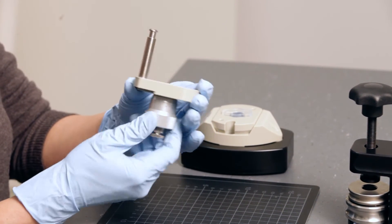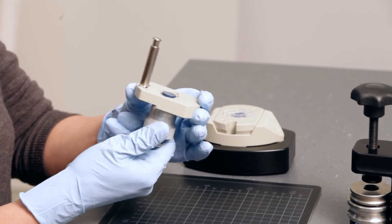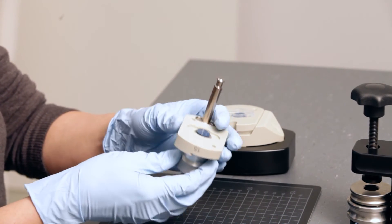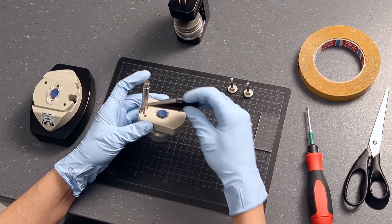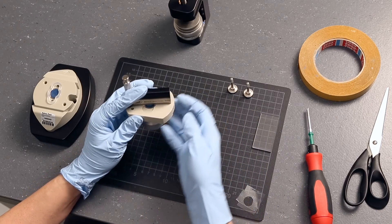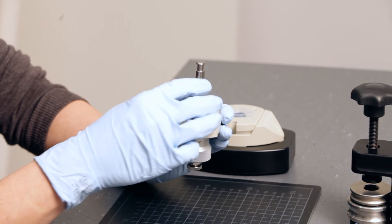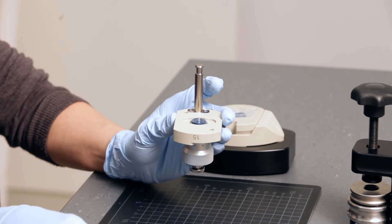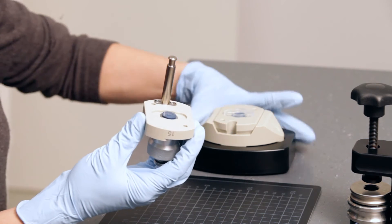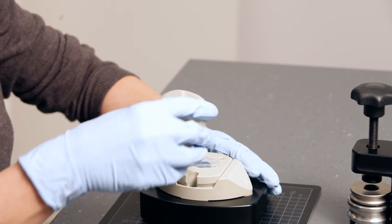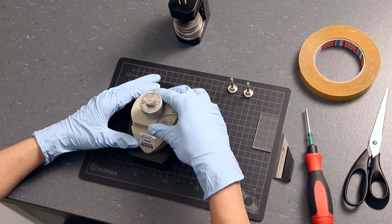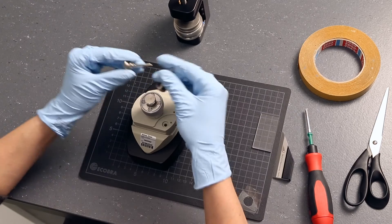Level the position of the sample surface with the adjustment knob. Use the straight edge for fine adjustment. Close the measuring cell and tighten both halves with the screws.